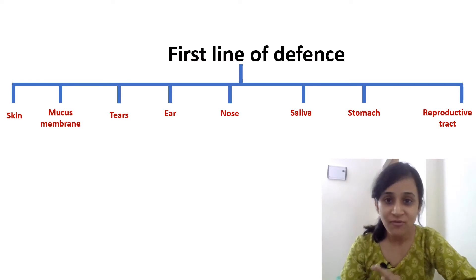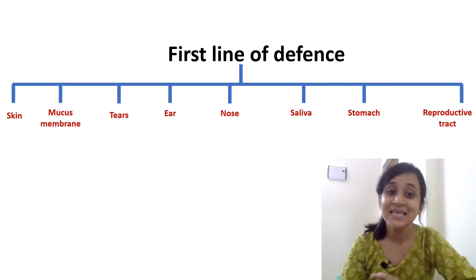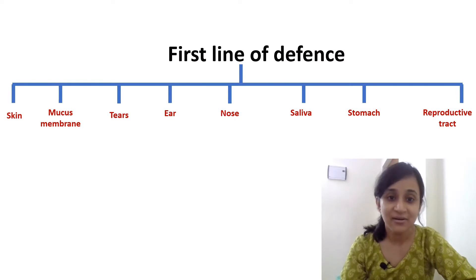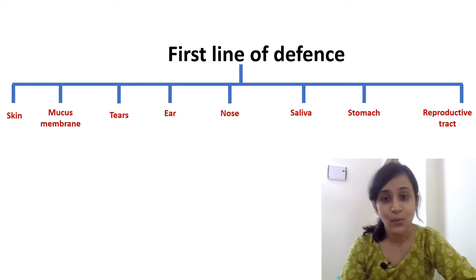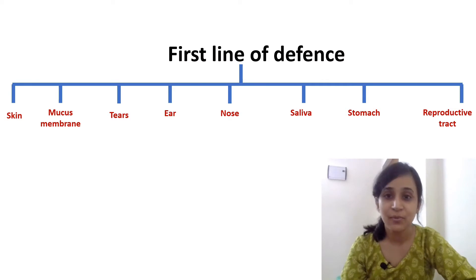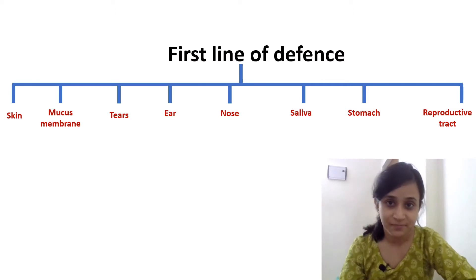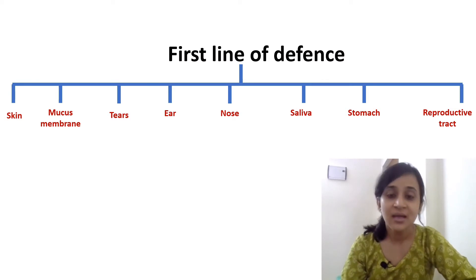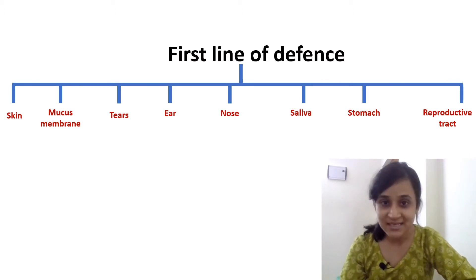The first line of defense is provided by skin, mucous membrane, tears, ear, nose, saliva, stomach, and reproductive tract. Now we will discuss them one by one.